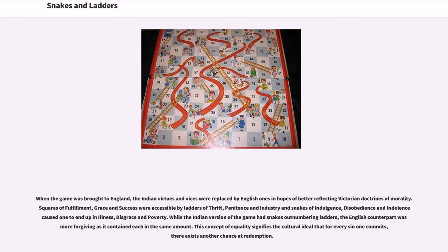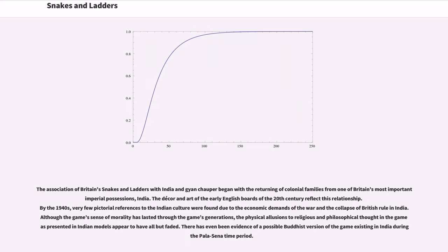While the Indian version of the game had snakes outnumbering ladders, the English counterpart was more forgiving as it contained each in the same amount. This concept of equality signifies the cultural ideal that for every sin one commits, there exists another chance at redemption. The association of Britain's Snakes and Ladders with India and Gyan Chaupar began with the returning of colonial families from India, one of Britain's most important imperial possessions.